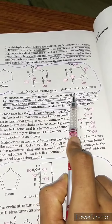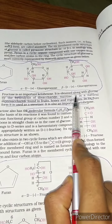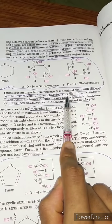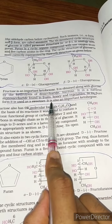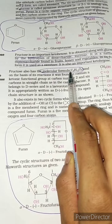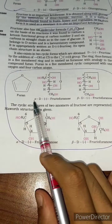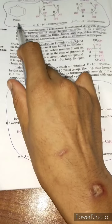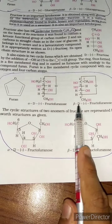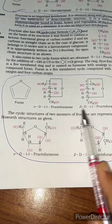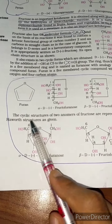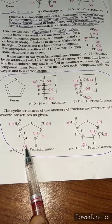Fructose is an important ketohexose obtained along with glucose by hydrolysis of sucrose. It is a natural monosaccharide found in fruits, honey, and vegetables, and its pure form is used as a sweetener. Its molecular formula is C₆H₁₂O₆ — the same as glucose. The cyclic structures of fructose are represented by Haworth structures: alpha-D(−)-fructofuranose and beta-D(−)-fructofuranose, derived from furan.